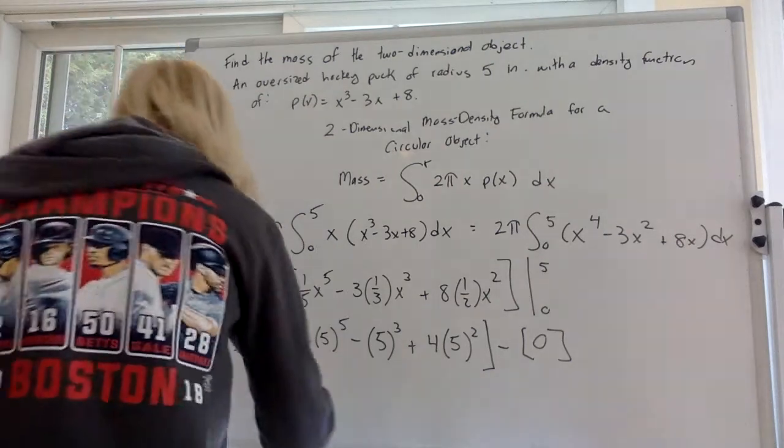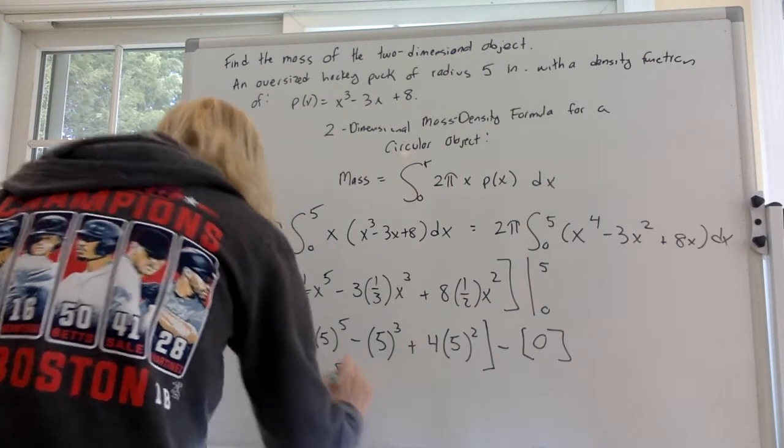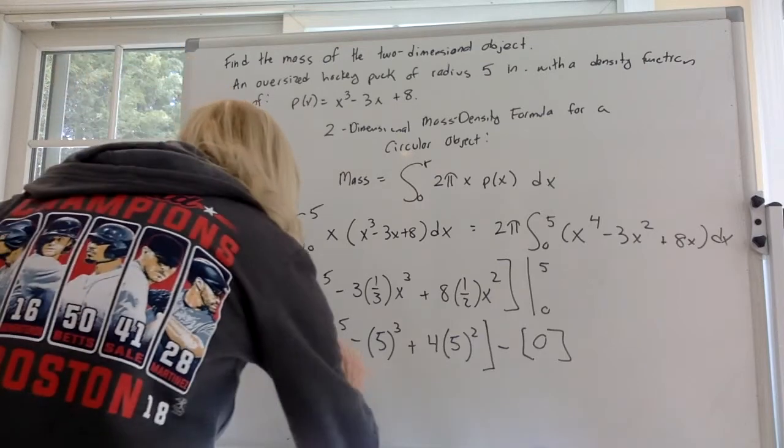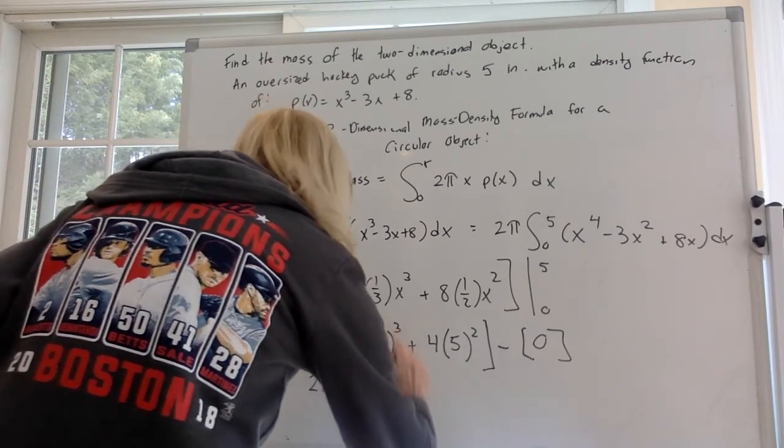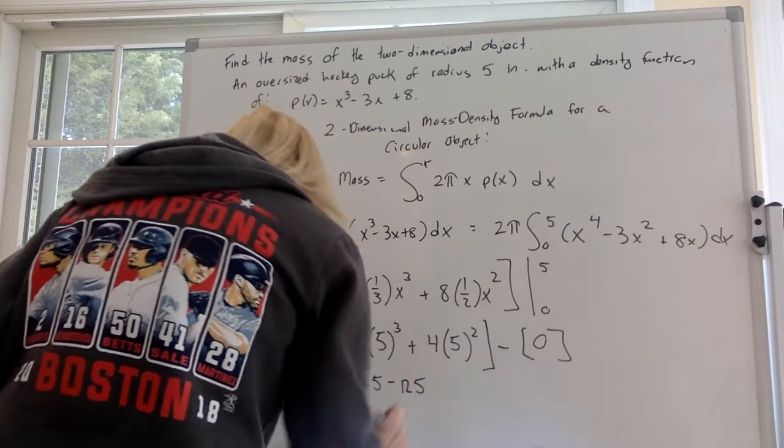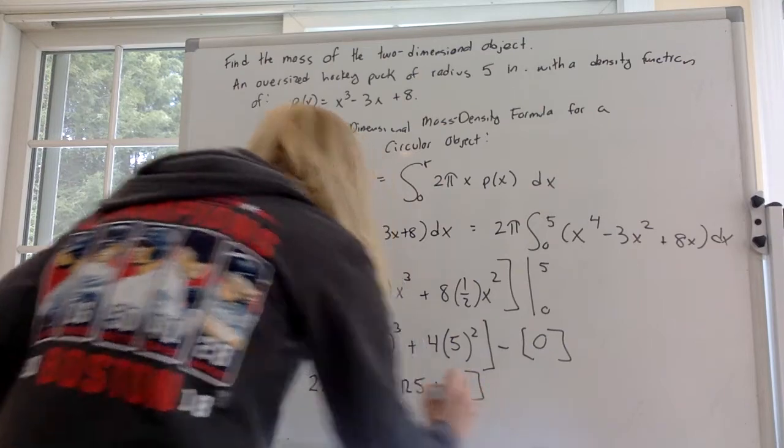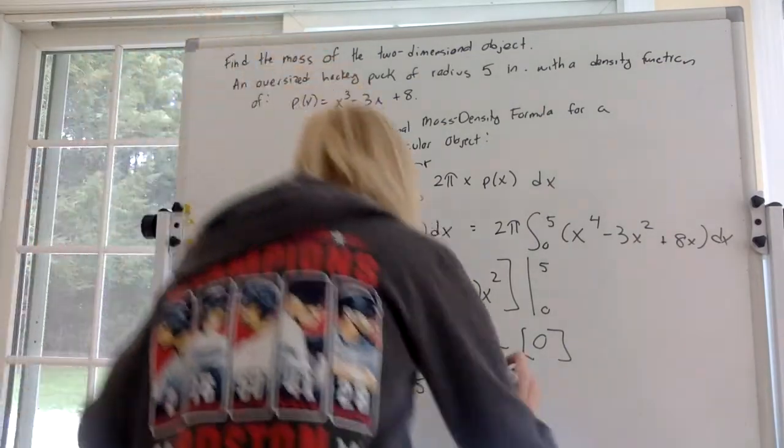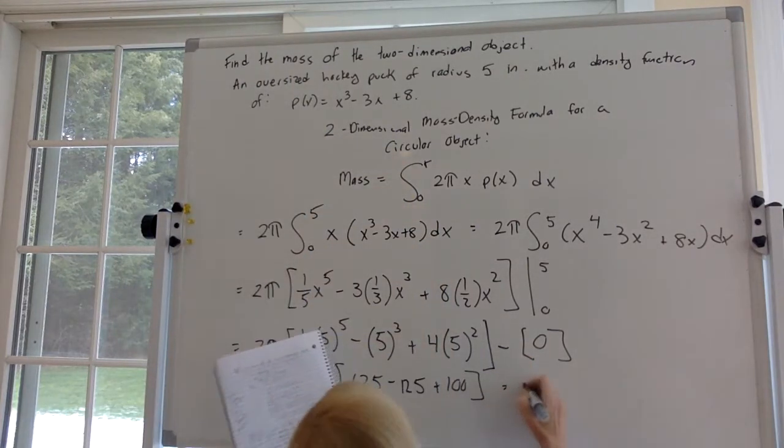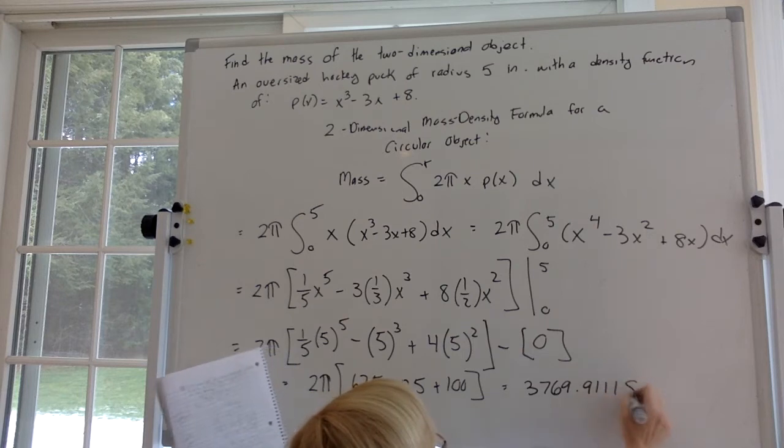So I ended up with 2 pi times 625 minus 125, that's 5 cubed, plus 100 because 4 times 25. And when I did that out, my calculator subtracted, added, subtracted, multiplied by 2 pi, and I'm getting 3769.91118.